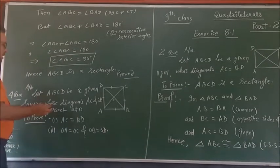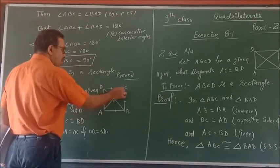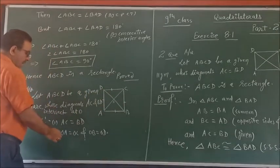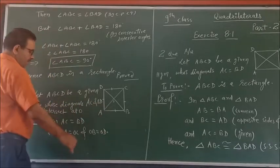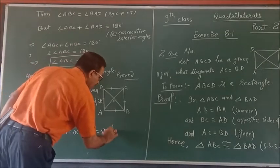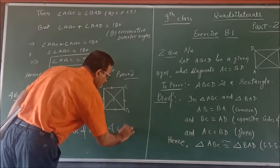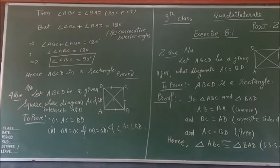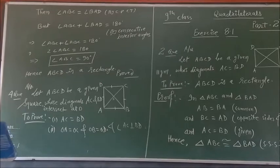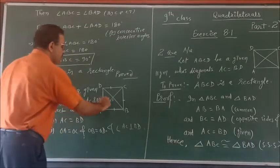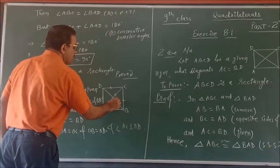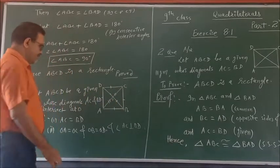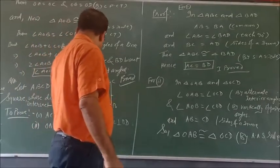We are given here ABCD is a square. According to this question we need to prove the diagonals AC equal to BD, and OA equal to OC and OB equal to OD, the meaning of bisect. At right angle it means also angle AOB, or in other words AC perpendicular to BD, bisect each other at right angles. And now our proof of this.